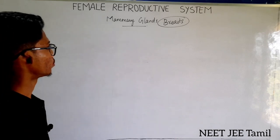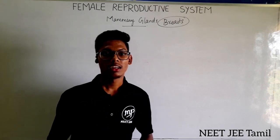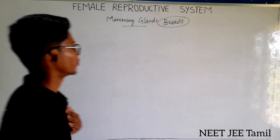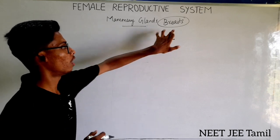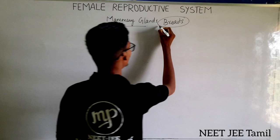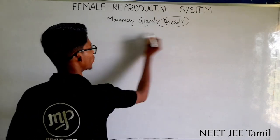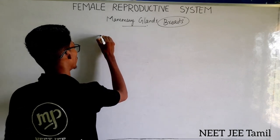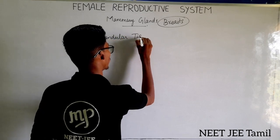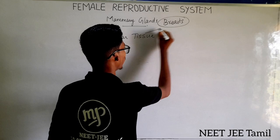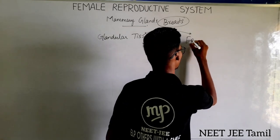The mammary gland is a paired organ located in the thoracic region. Mammary glands, or breasts, have two main constituents: glandular tissue and a variable amount of fat.